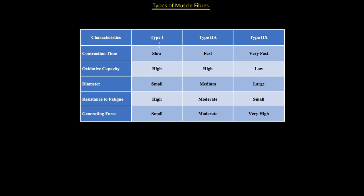You should understand the three types of muscle fibers before memorizing this diagram, because understanding makes it much easier to retain. We have three different types of muscle fibers: fast twitch, slow twitch, and intermediate. Type one is slow twitch oxidative fiber. Type two A is intermediate — somewhere between fast and slow. Type two X is the very fast fiber.